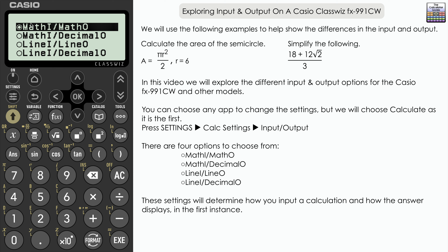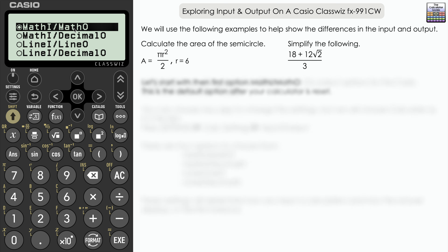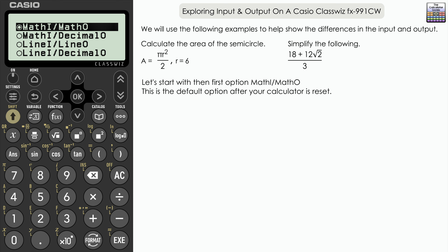We have math input math output, math input decimal output, line input line output, and line input and decimal output. In this video we're going to explore what the differences are and what option you might prefer for the sort of work you're doing. We're going to start with the initial option, math input math output, which is the default option after you reset your calculator.